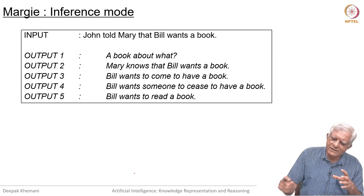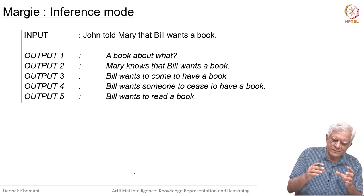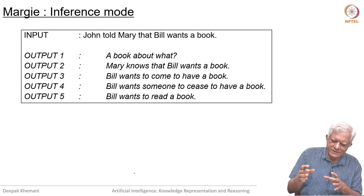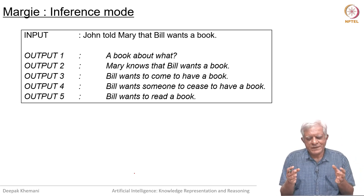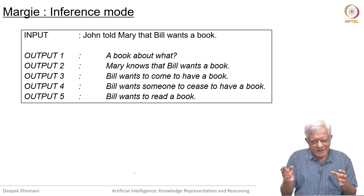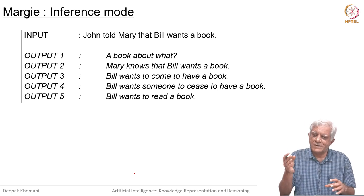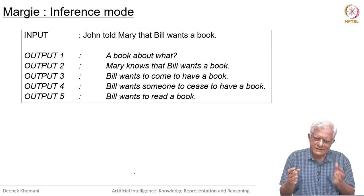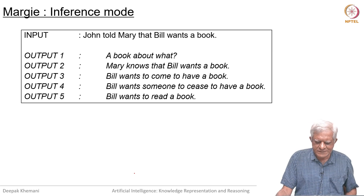You can imagine that when you are talking about giving a book from person A to person B, you can make inferences that now person B has the book, person A doesn't have the book, person B wanted the book, maybe person B will read the book, and things like that. So you can put in knowledge of this kind and then make these inferences.